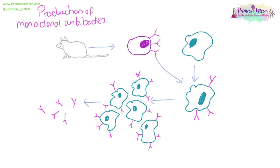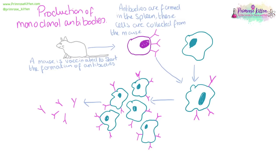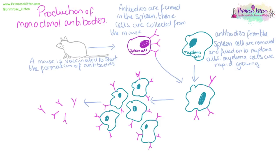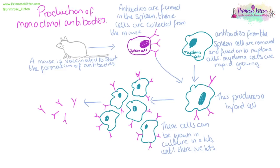A mouse is vaccinated to start the formation of antibodies. After a while, cells from the spleen where the antibodies have formed are collected. These are fused with a known cancerous cell line to produce a hybrid cell. The hybrid cells are grown in culture in a laboratory until there are large numbers of them. The cells and antibodies are then separated, and the antibodies can be used for various purposes such as pregnancy tests or cancer detection.